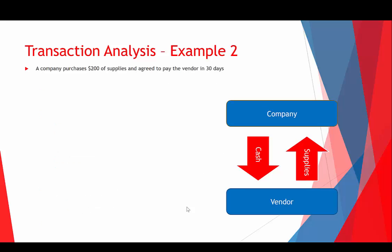Transaction number two: a company purchased $200 of supplies and agreed to pay the vendor in 30 days — a vendor being anyone the company is purchasing supplies from. Step one: supplies is going to be an asset, and since we're paying later, it's going to be accounts payable, which is a liability. Note that the transaction description doesn't say 'accounts payable' anywhere — you have to know that if you've purchased from someone and will pay later, that's an account payable. That's part of the language of accounting.